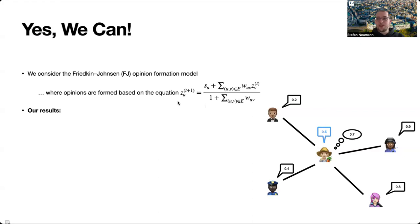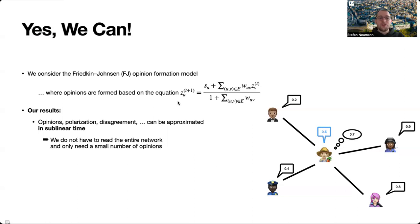If we take this model as input then our results are as follows. We can estimate opinions, the polarization and the disagreement in the network in sublinear time. In particular we do not have to read the entire network and we only have to look at local snapshots and we only have to assess a few number of opinions of very few users.